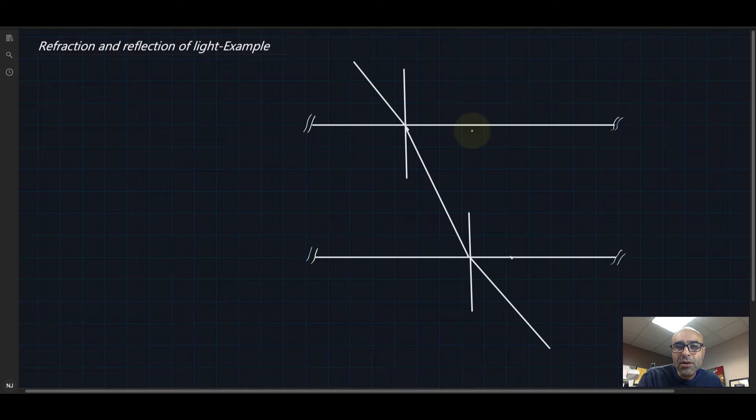Hey there everyone, let's look at this example. It's an application on reflection and refraction of light using Snell's law for the refraction. So it seems that there is a ray coming from this medium and this medium has a refractive index of 1.1.